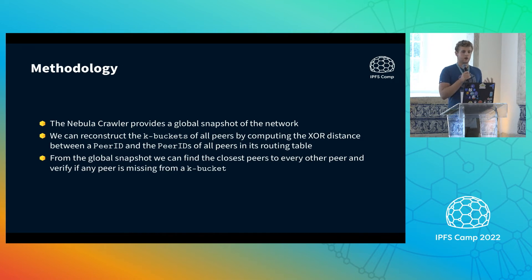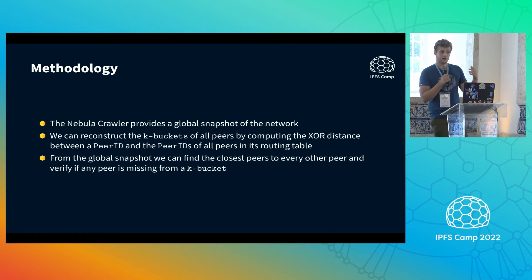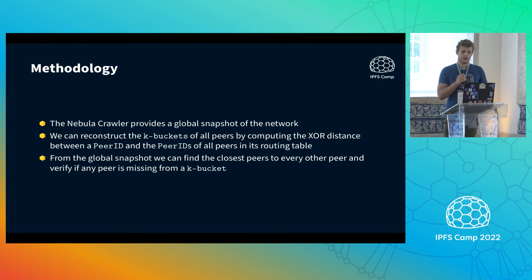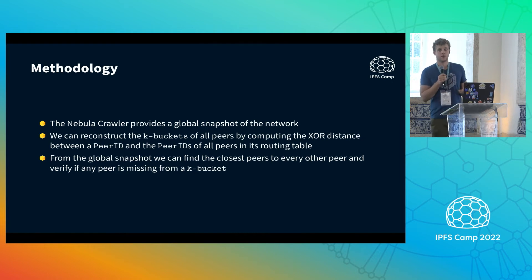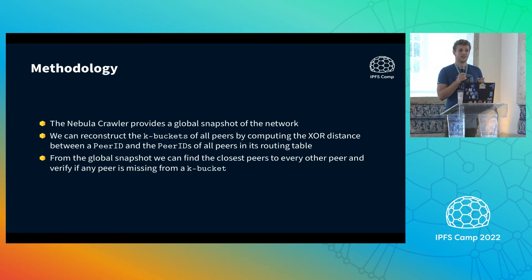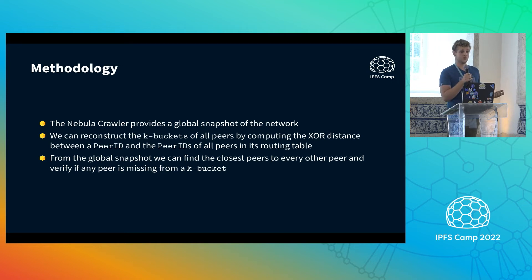With global knowledge of the network, we can verify if peers should belong to certain buckets but are missing. One important property of Kademlia is that routing is sound only if you know all of your closest neighbors and your closest neighbors know you. If your closest neighbors do not know you, then no one can route to you. That's what we wanted to verify.